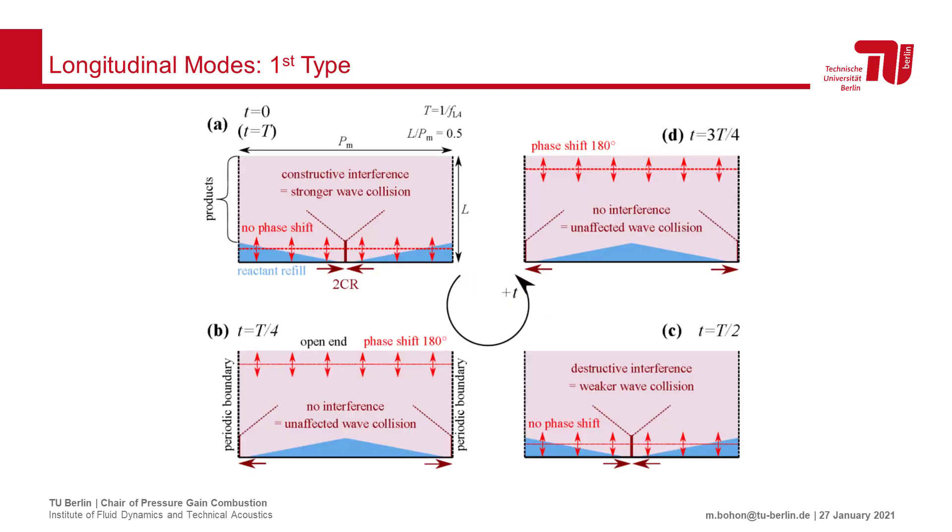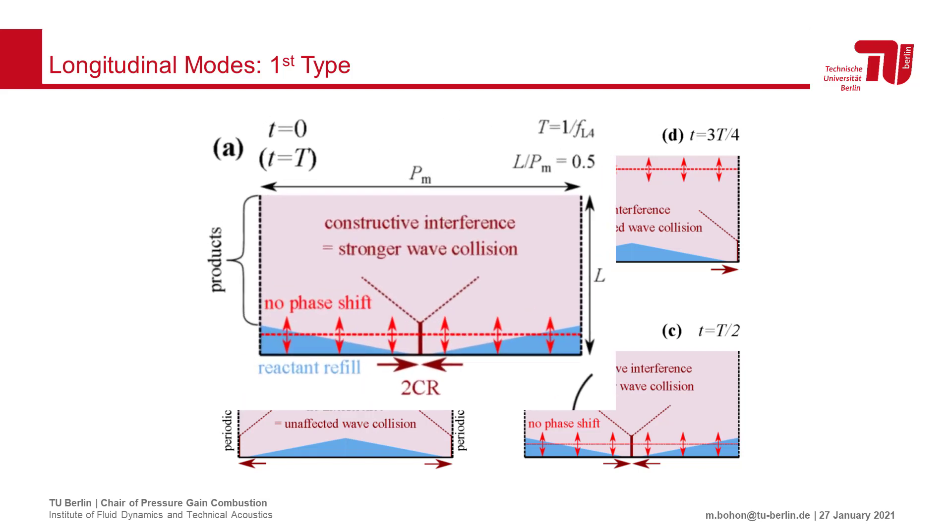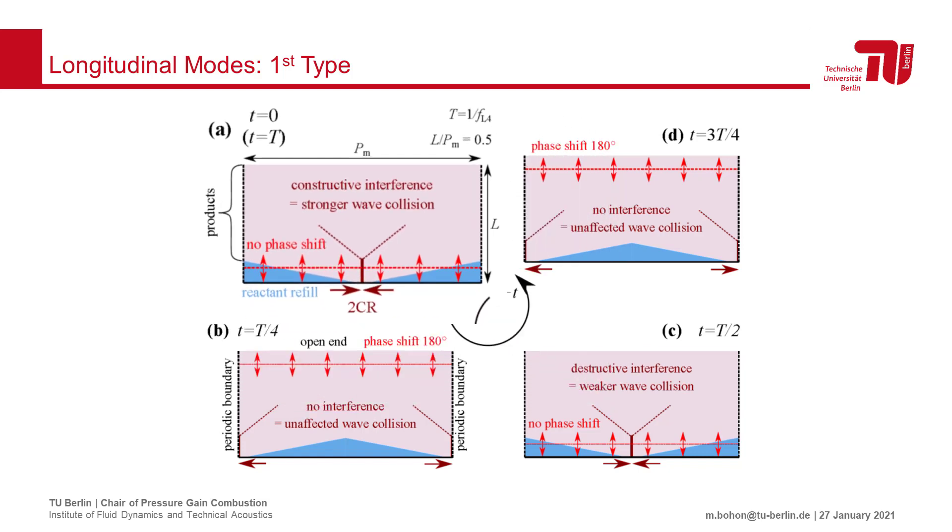Therefore, we propose the following mechanism for the stabilization of this system. First, a collision of two opposed waves results in a strong interaction, leading to a wave that propagates the length of the combustor.